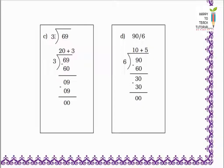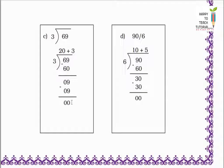Next example: 69 divided by 3 — 69 rupees ko 3 logon mein baantna hai. I start by giving 20 rupees to each. 3 twenties are 60. 69 minus 60 equals 9 rupees still left to distribute. Next I give 3 rupees more to each. 3 threes are 9. 9 minus 9 equals 0. Remainder is 0, nothing is left. I distribute all the money equally among 3 people. Each one gets 20 plus 3 equals 23 rupees.